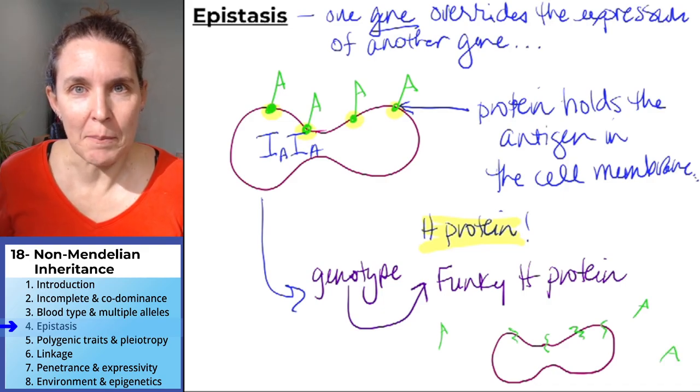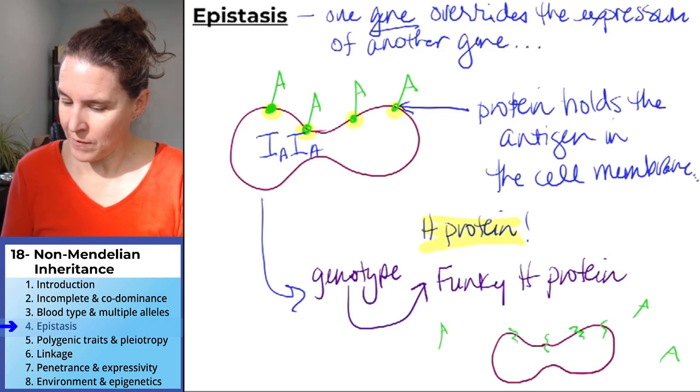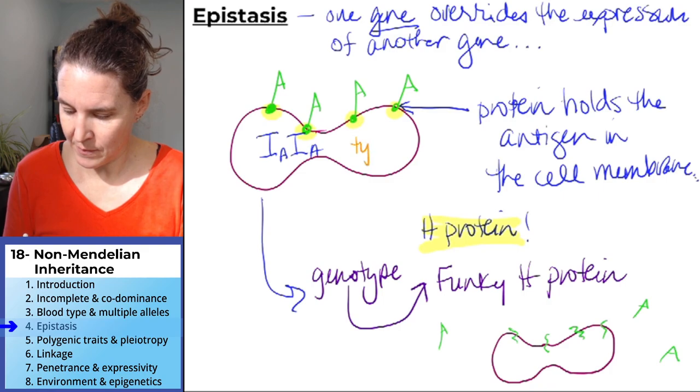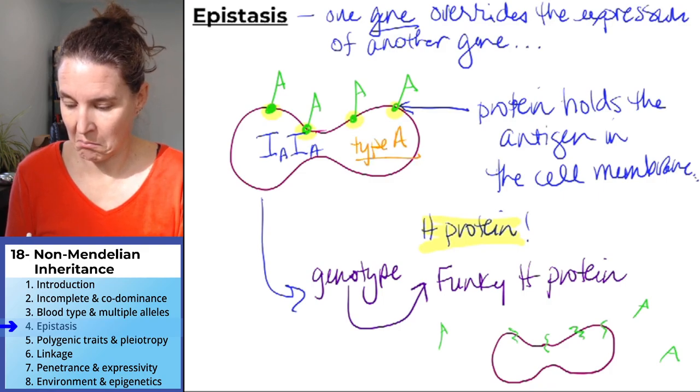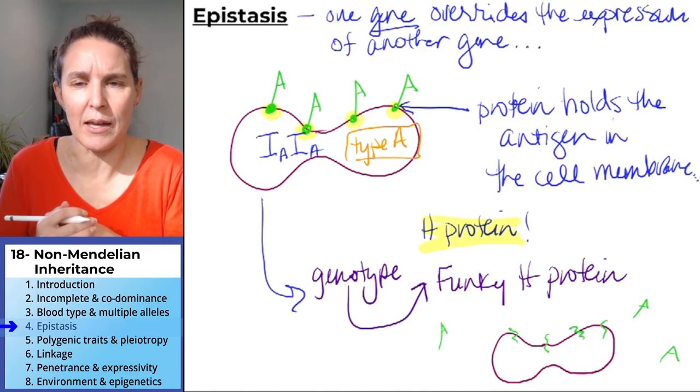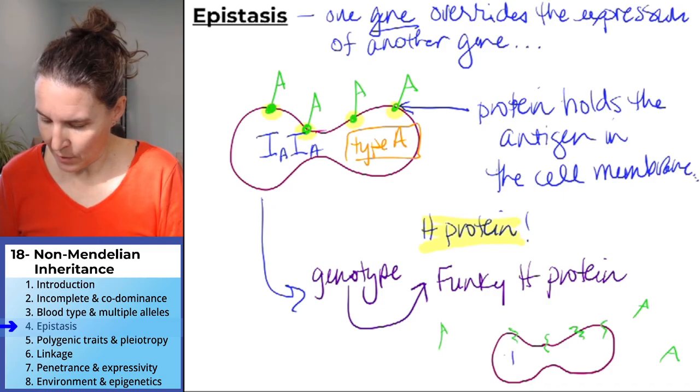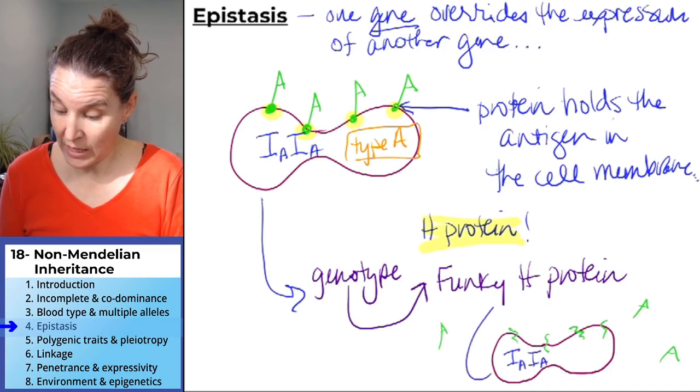What's my phenotype now? I would have expected that my phenotype is type A. And definitely based on that genotype, I would expect type A blood. Same genotype, IAIA, but funky H.